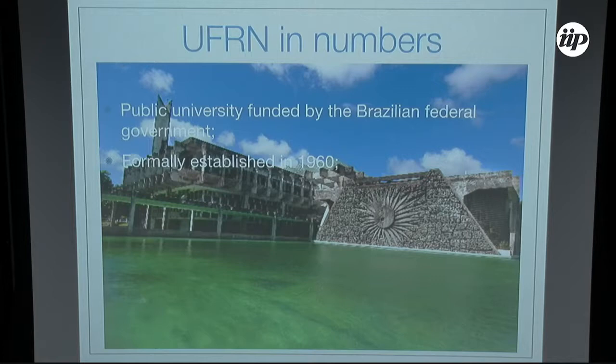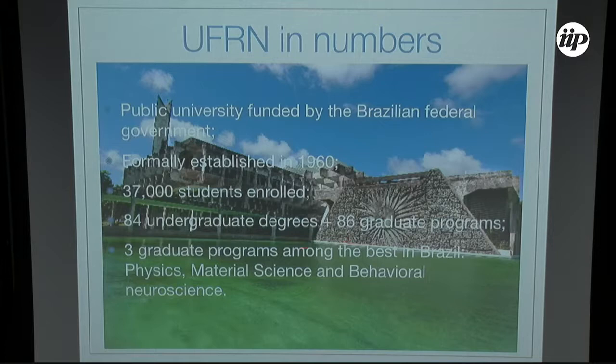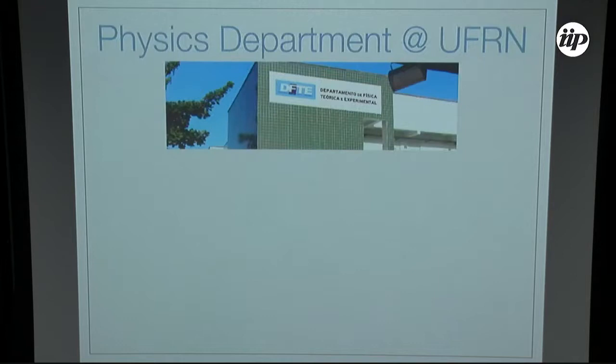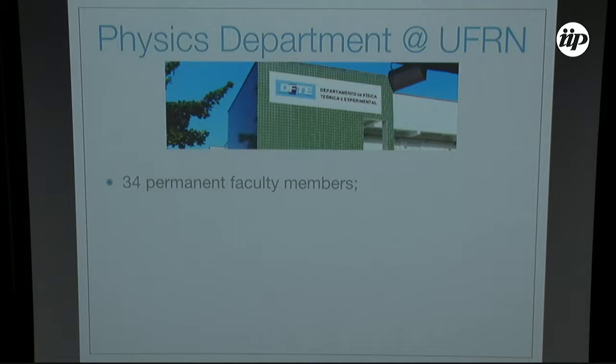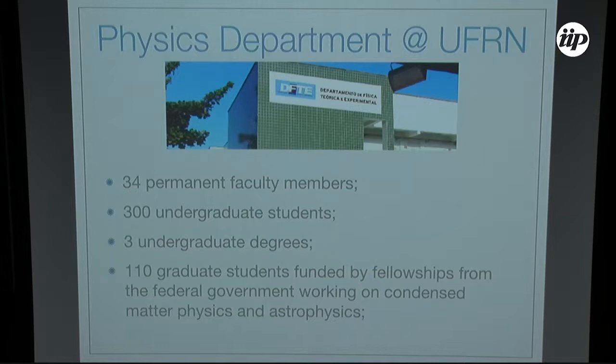Let me tell you a little bit about our university. It's a public university funded by the federal government, formally established in 1960. Today we have about 37,000 students enrolled in 84 undergraduate programs and 86 graduate programs. Three of these graduate programs are among the best in Brazil: physics, material science, and behavioral neuroscience. The physics department has 34 permanent faculty members, and we teach about 300 undergrads. We have about 110 graduate students working mostly in condensed matter physics and astrophysics.